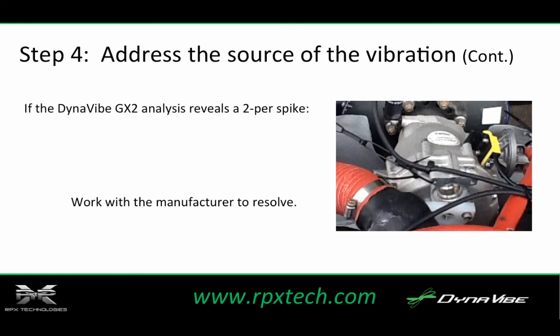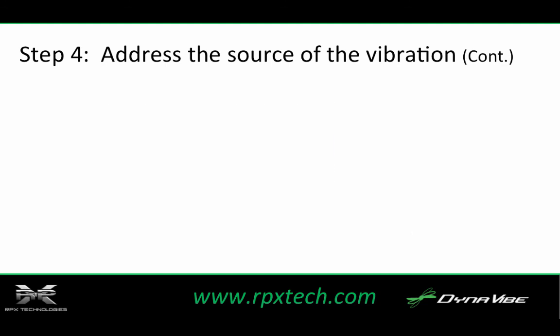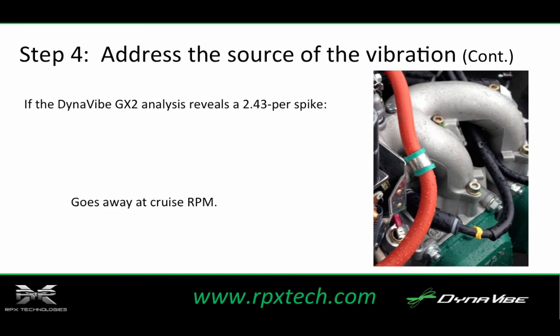When a 2-per spike is present, work with the engine manufacturer to determine the cause of the gearbox vibration. A 2.43-per spike is seen on all these engines, and it is essentially a variation in the torque of the engine that occurs with every other cylinder firing. As pictured here, there is a difference in intake lengths on the intake manifold of this engine, with the front cylinder having a longer flow path than the back cylinder. This difference in front-back airflow causes a torsional vibration in the engine. This vibration goes away as RPM is increased into typical cruise RPM, and therefore is not a concern.